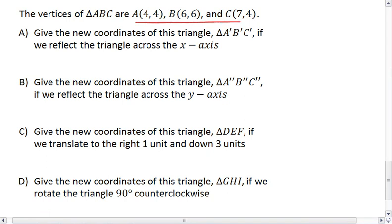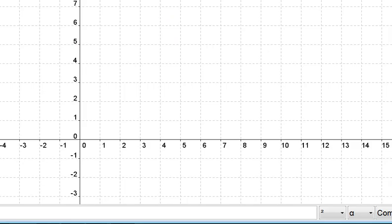All right, originally we were given the three points: (4,4), (6,6), and (7,4). So we have point (4,4), which is A.